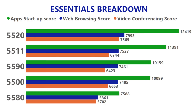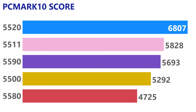Here we have the PCMark 10 score. The 5520 is almost 1,000 points above the 5511. The 5590, oddly enough, scores slightly better than the 5500, and of course the older dual-core 5580 is right at the bottom.